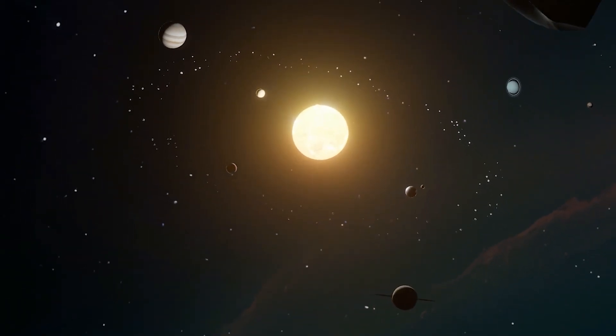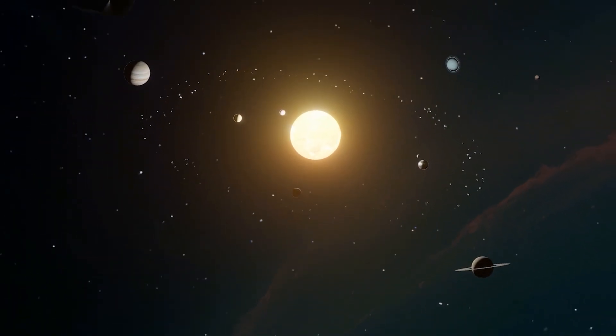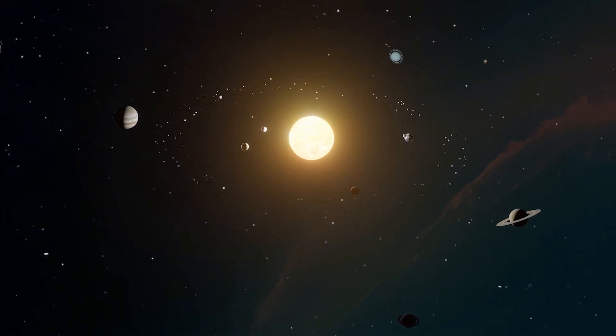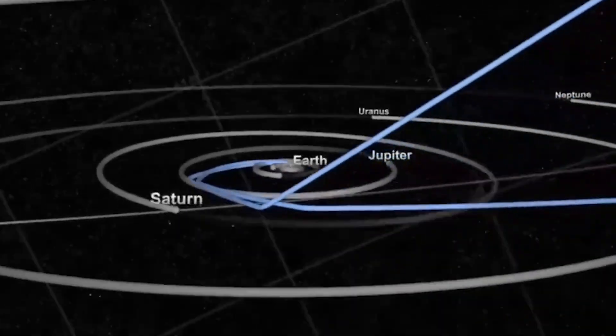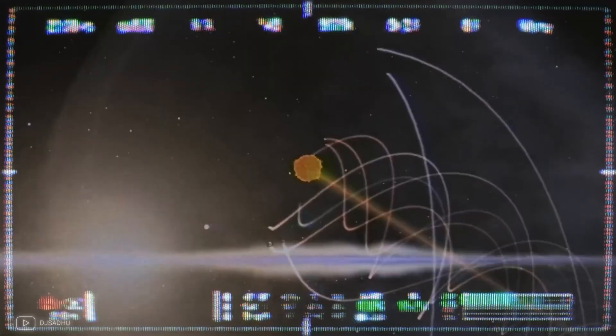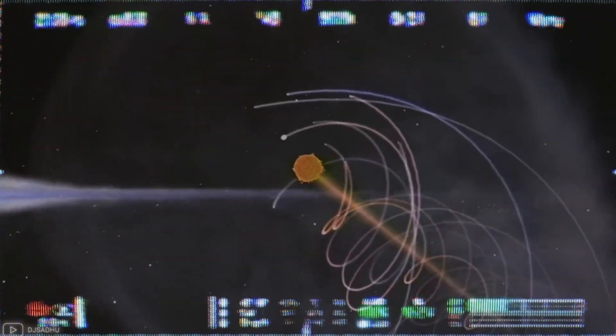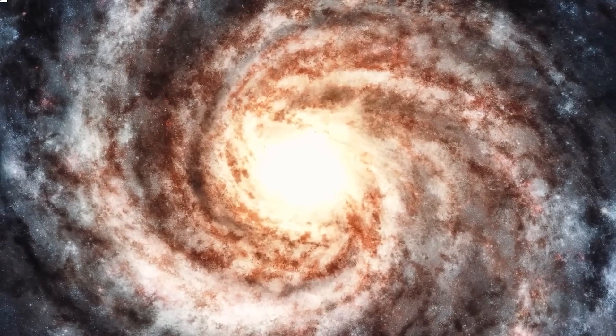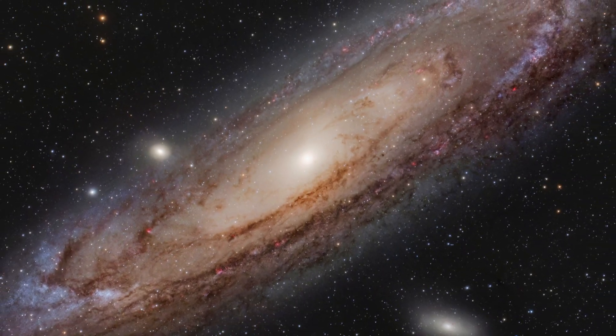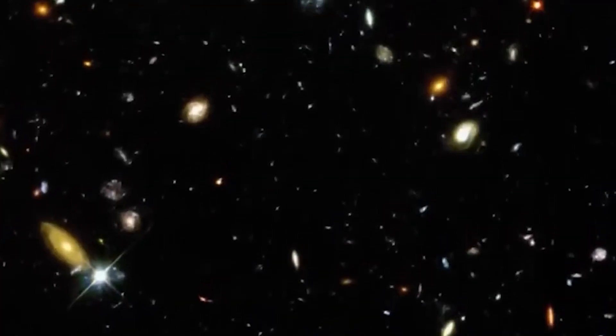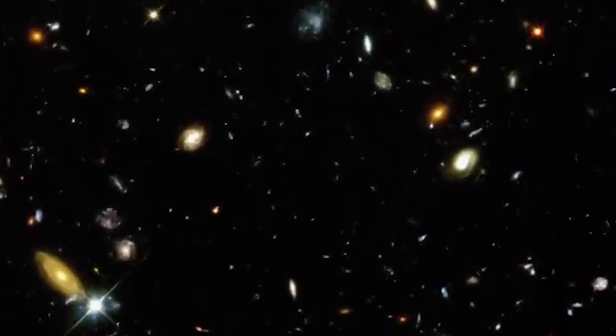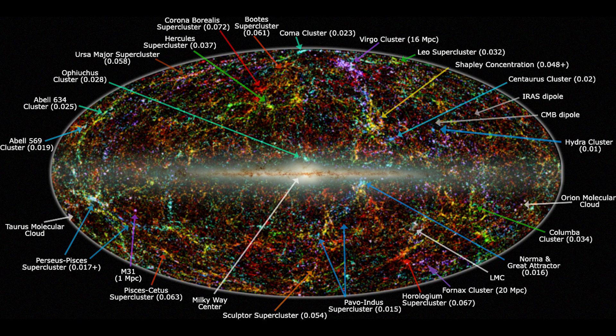Yet, our solar system's journey is not confined to the Milky Way. We are part of an ever-expanding universe, constantly moving due to the gravitational pull of various galactic clusters and superclusters. For instance, our galaxy is in a gravitational dance with the Andromeda galaxy, part of a larger collection of galaxies known as the Local Group. This group, among others, is drawn towards an area of immense density, known as the Great Attractor.